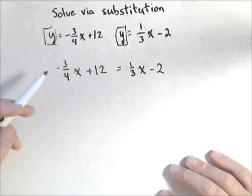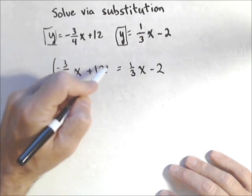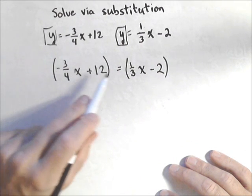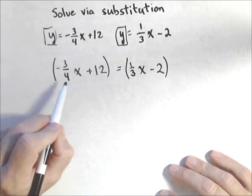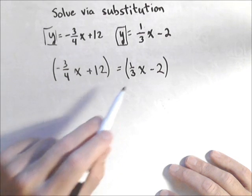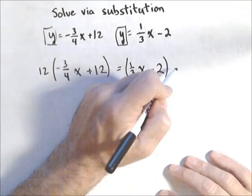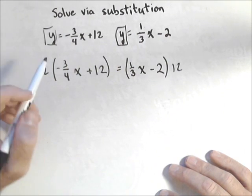Now at this point maybe I make the decision I don't want to deal with fractions, so what I'm going to do is I'm going to multiply both sides by the least common denominator of both fractions. So I need to get rid of the 4 and the 3, so the least common denominator would be 12. So I'm going to multiply both sides by 12.